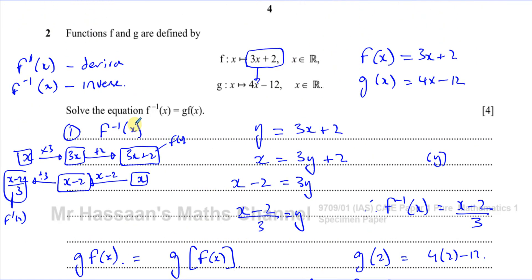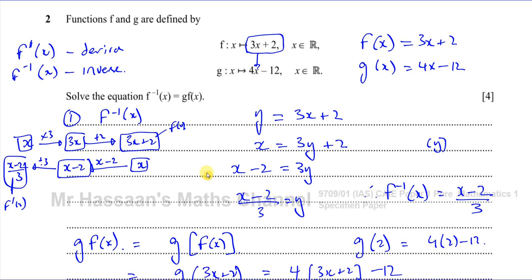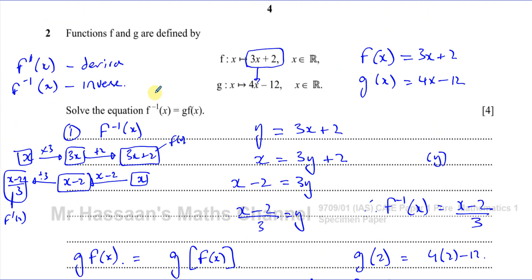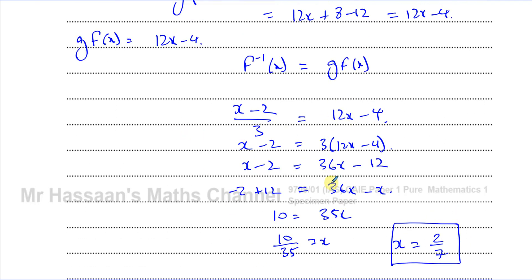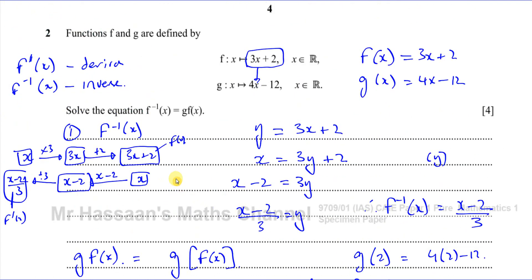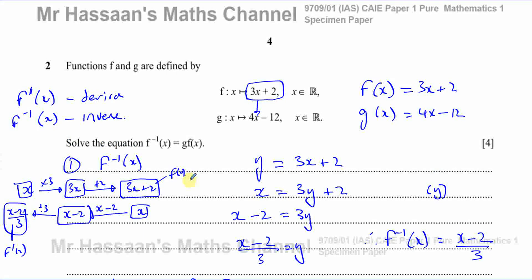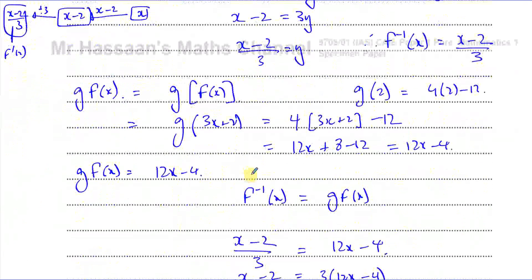And that is the solution to this equation — the inverse of f of x equals g of f of x when x equals 2/7. So there we have answered question number 2. It's a fairly basic, almost IGCSE-style question in terms of what we learned in IGCSE maths, so it's not too difficult.